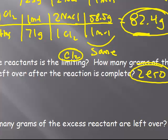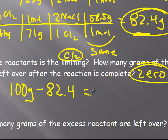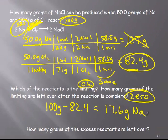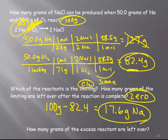According to conservation of mass, I have to have 100 grams when the reaction is finished. All of the chlorine is converted to sodium chloride — all 50 grams of that is gone, and you make 82.4 grams of sodium chloride. So why is it not 100? Because there's Na left over. I should have 100 grams total. I made 82.4 grams of sodium chloride. So the difference — 100 minus 82.4 — which is 17.6 grams — that's how much sodium is left over.